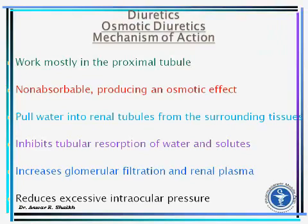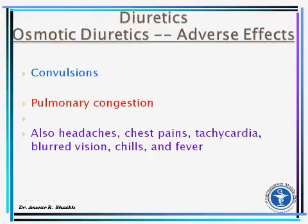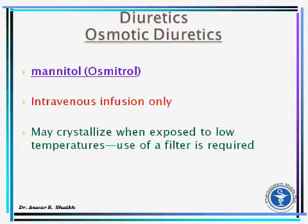Osmotic diuretics work mostly in the proximal tubule. They are non-absorbable, producing an osmotic effect that pulls water into the renal tubules from surrounding tissues, inhibiting tubular reabsorption of water and solutes, increasing glomerular filtration and renal plasma flow, and reducing intraocular pressure. An example is mannitol, given only as an intravenous infusion.